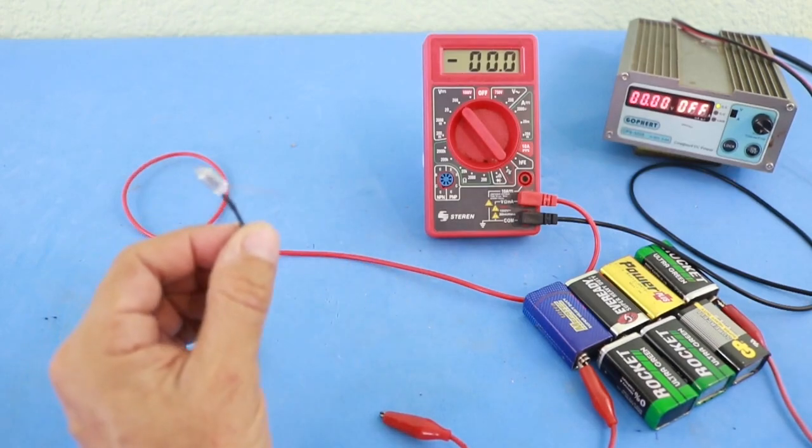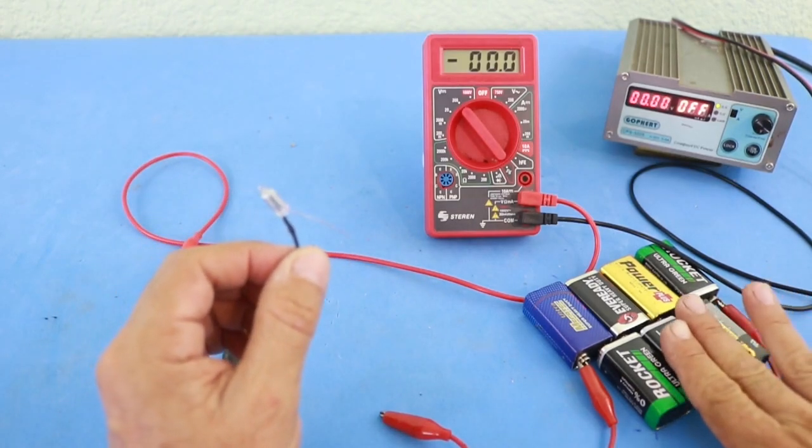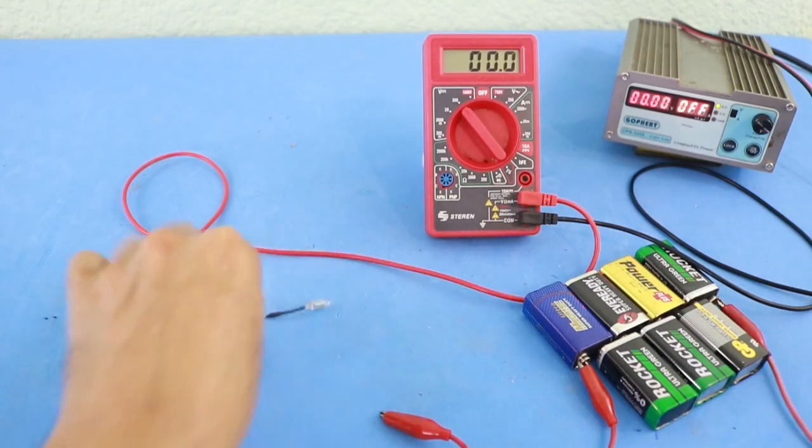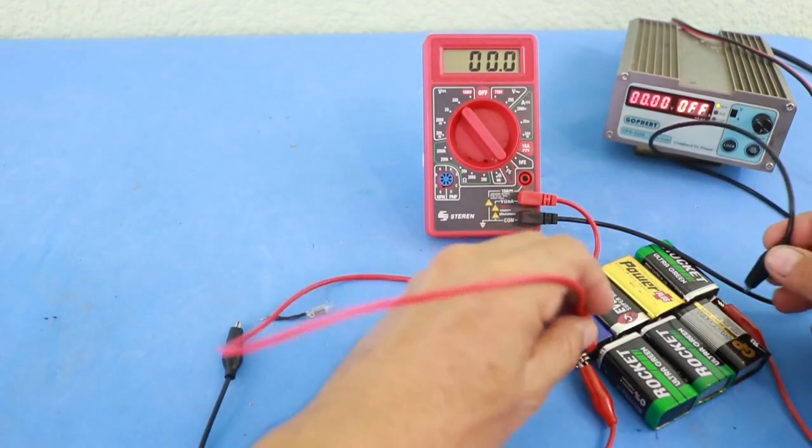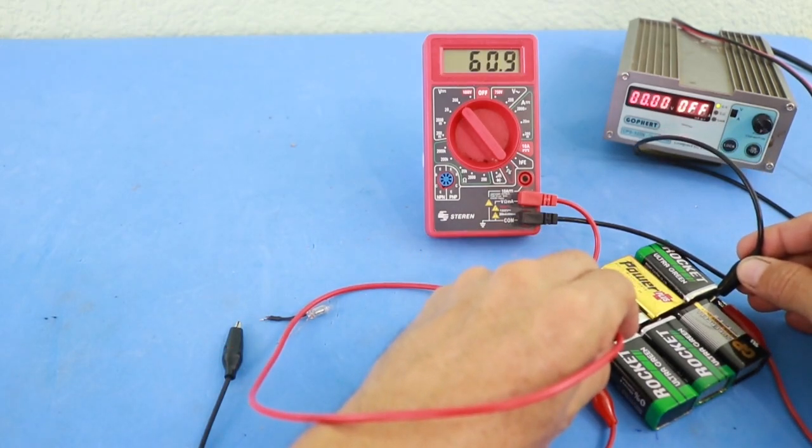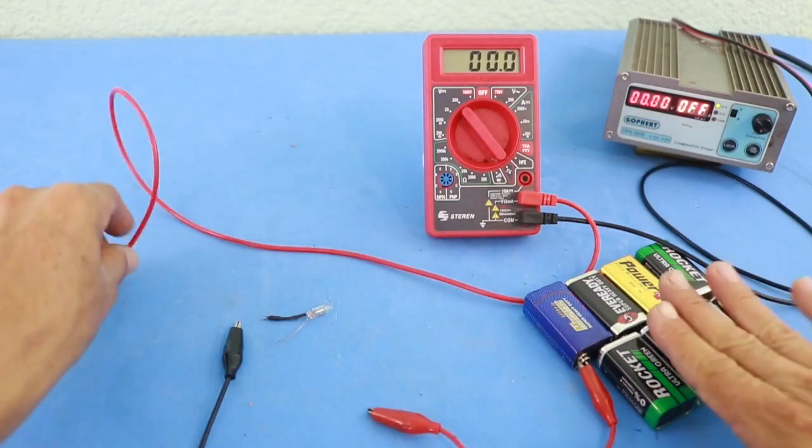So I made this battery with seven 9-volt batteries and this gives a voltage of 61 volts from all batteries.